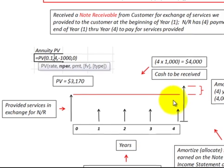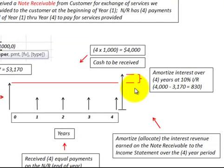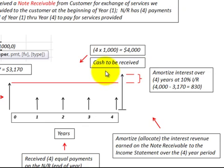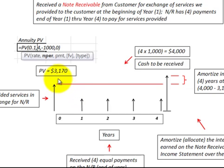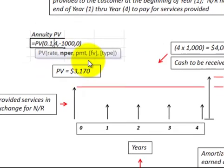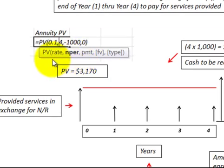We have to calculate how much interest is earned on that note, and then we have to amortize — or allocate — that interest revenue to the income statement over the next four years. We're going to receive four equal payments of a thousand dollars, which is four thousand dollars total cash to be received. We then have to discount those back to their present value.